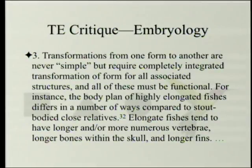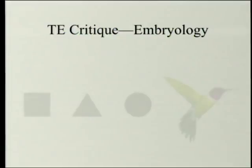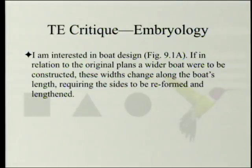Third, transformations from one form to another are never simple, but require completely integrated transformation of form for all associated structures — and all of these must be functional. For instance, the body plan of highly elongated fishes differs in a number of ways compared to stout-bodied close relatives: elongated fishes tend to have longer and/or more numerous vertebrae, longer bones within the skull, and longer fins.